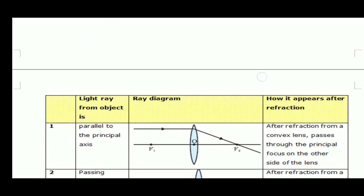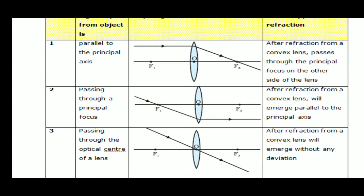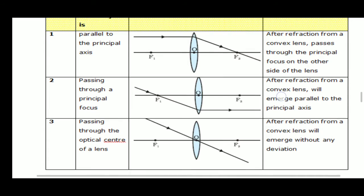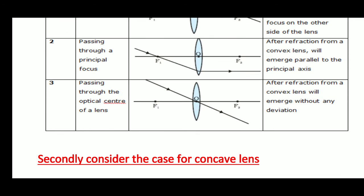First, consider the case of a convex lens. We will take three different conditions of propagation of rays. First, when a ray is parallel to the principal axis, after refraction from a convex lens it passes through the principal focus on the other side of the lens. Second, a ray passing through the principal focus — after refraction from a convex lens it will emerge parallel to the principal axis. Third, when a ray passes through the optical center of the lens, after refraction from a convex lens it will emerge without any deviation — it will go straight.